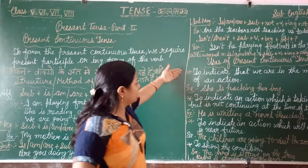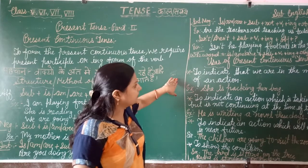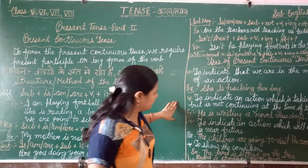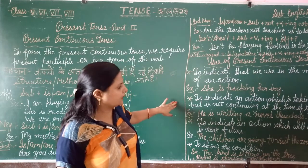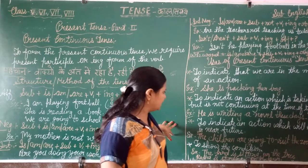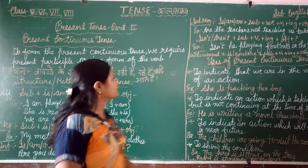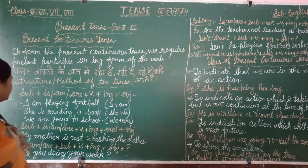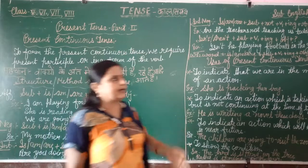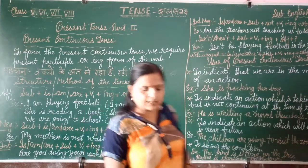So I hope it is clear: we use present continuous tense to indicate that we are in the middle of an action, to indicate an action which is taking place but not continuing at the time of speaking, to indicate an action which will happen in the future, and also to show a planned condition. Students, follow and apply these rules and the second part will be clear and understood. Thank you very much.